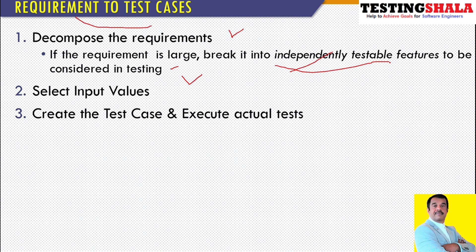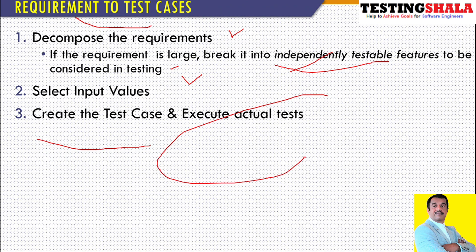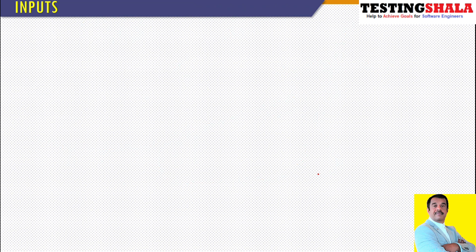The second step is selecting the input values for testing those features. Once we have that, we create test cases, execute them, and get the actual results. This is the overall journey from requirements to test cases.